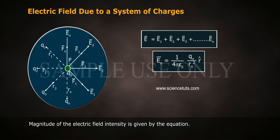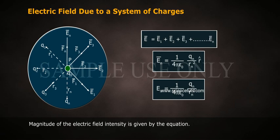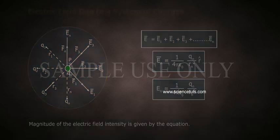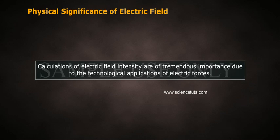Magnitude of the electric field intensity is given by the equation En is equal to 1 by 4 pi epsilon naught Qn by Rn square. Physical significance of electric field.